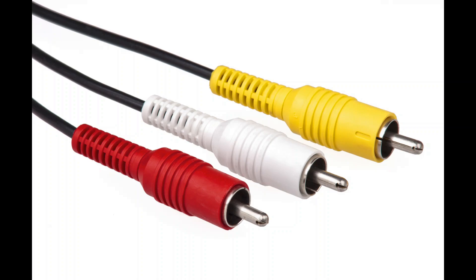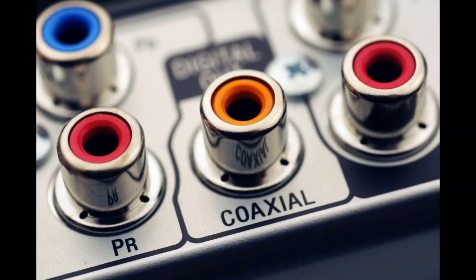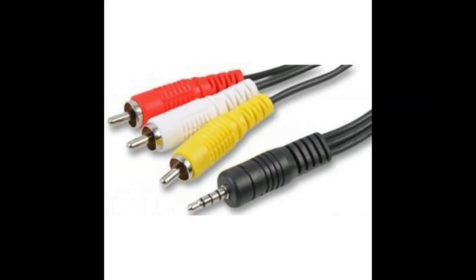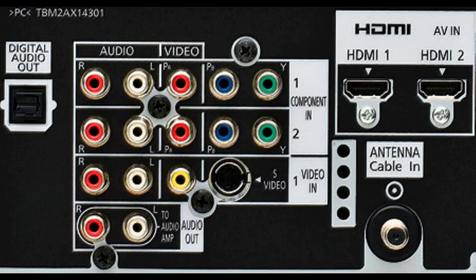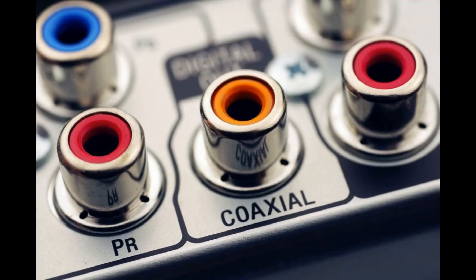Coaxial digital connection is probably the least common connection when it comes to modern AV kit. Coaxial digital uses electricity to transmit audio. The connector is a standard circular RCA connector, the kind found at either end of a pair of analog interconnects. Coaxial may not be as widespread as its rival optical connection these days, but you'll still find it at the back of certain AV receivers, stereo amplifiers and TVs. In my experience, compared to optical, a coaxial connection does tend to sound better. That's because it has greater bandwidth available, meaning it can support a higher quality of audio up to 192 kHz. Optical is usually restricted to 96 kHz.